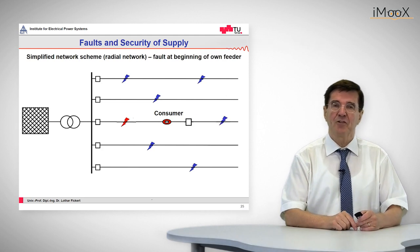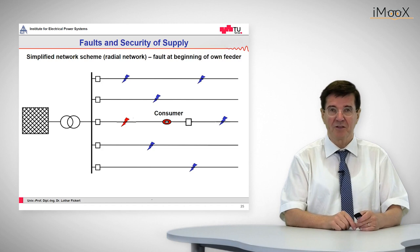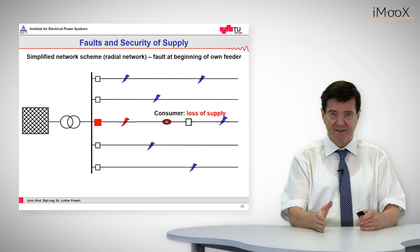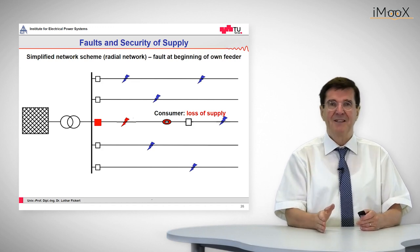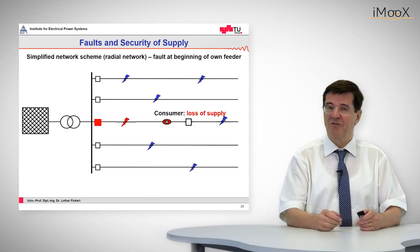The next case is a fault upstream of that consumer. Again, what happens? The fault occurs, the arrow has changed to red, the protection comes in and trips again. Now it trips the consumer because the fault is upstream of it. What can be done if we are not happy with this?